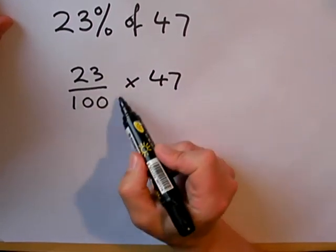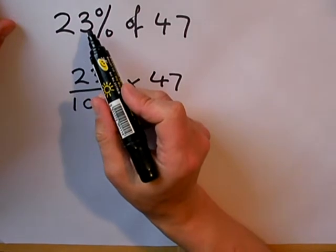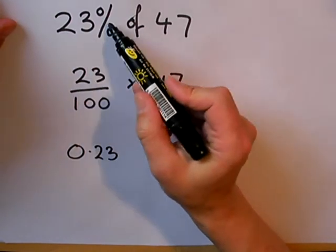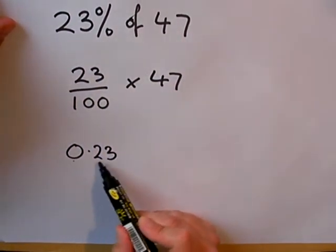The alternative to this, instead of thinking of 23 out of 100, is to think of the percentage as a decimal. And most people can work that 23% as a decimal by sticking a decimal point in the front, 0.23.